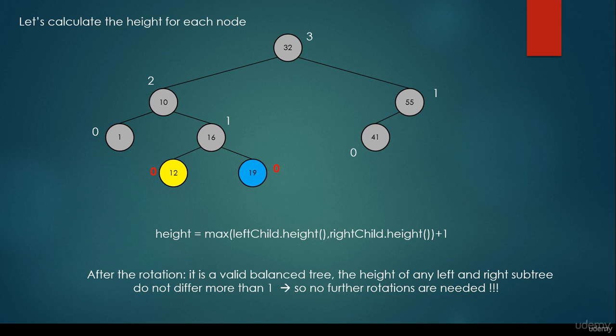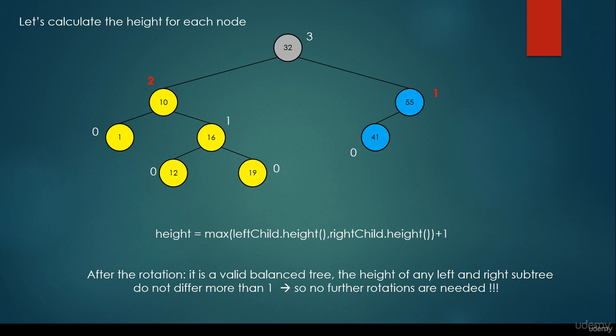Let's prove it. The left subtree and right subtree of node 16 both have height parameter 0, so we don't have to rotate. What about node 10? We have height parameters 0 and 1 for its left and right subtrees — they do not differ more than 1, so we don't have to rotate. What about the left subtree and right subtree of the root node? We have height parameters 2 and 1. They do not differ more than 1, so we conclude this is a balanced binary tree and we don't have to make further rotations.